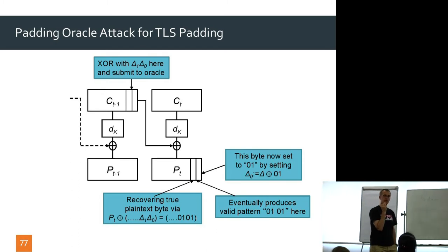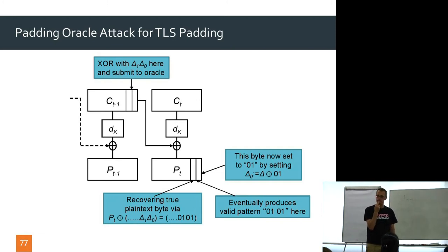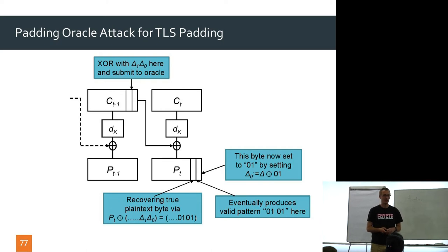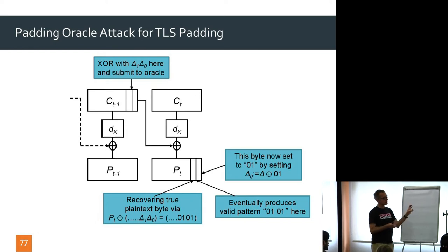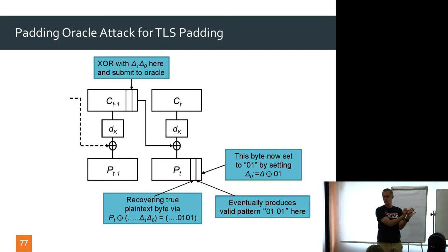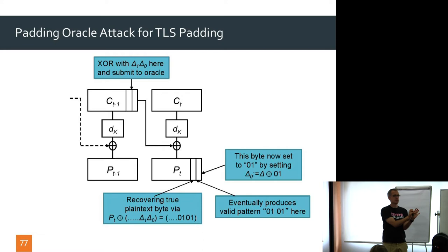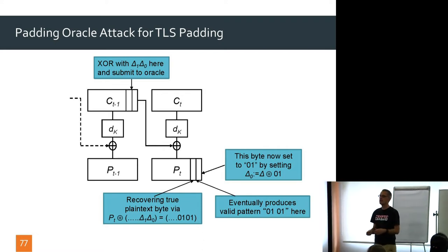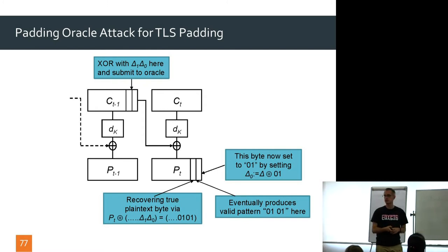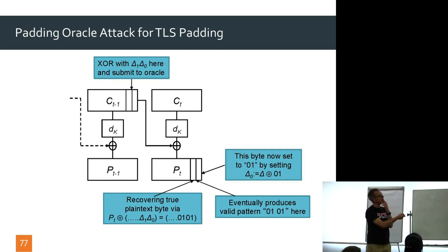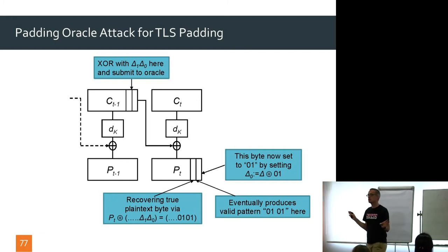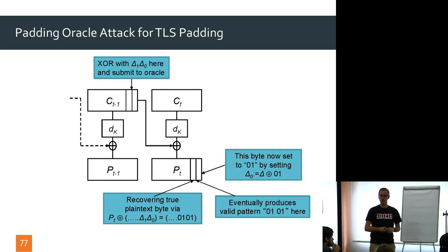What's the cost of this attack? Worst case for each byte, you try 256 values of delta, and there are 16 bytes in the block. So worst case is 16 × 256 = 2^12 queries to the padding oracle. Average case is about half that — roughly 128 trials per byte on average. And we can put different target blocks CT and recover full plaintext if we want.